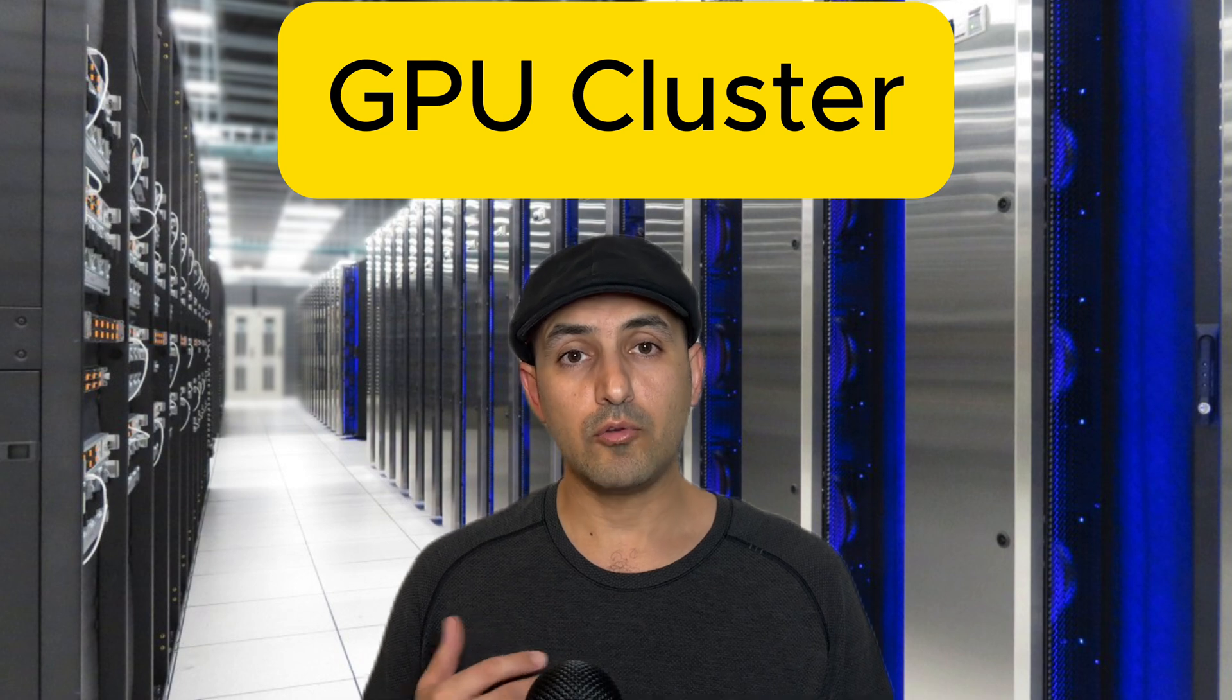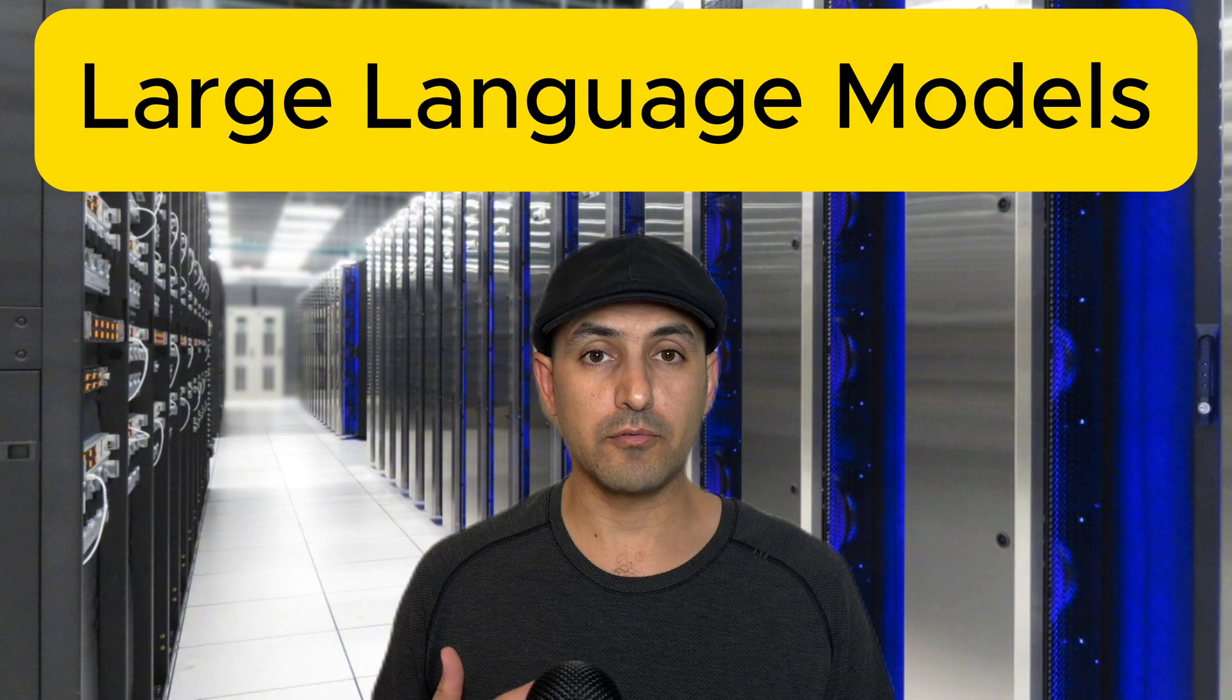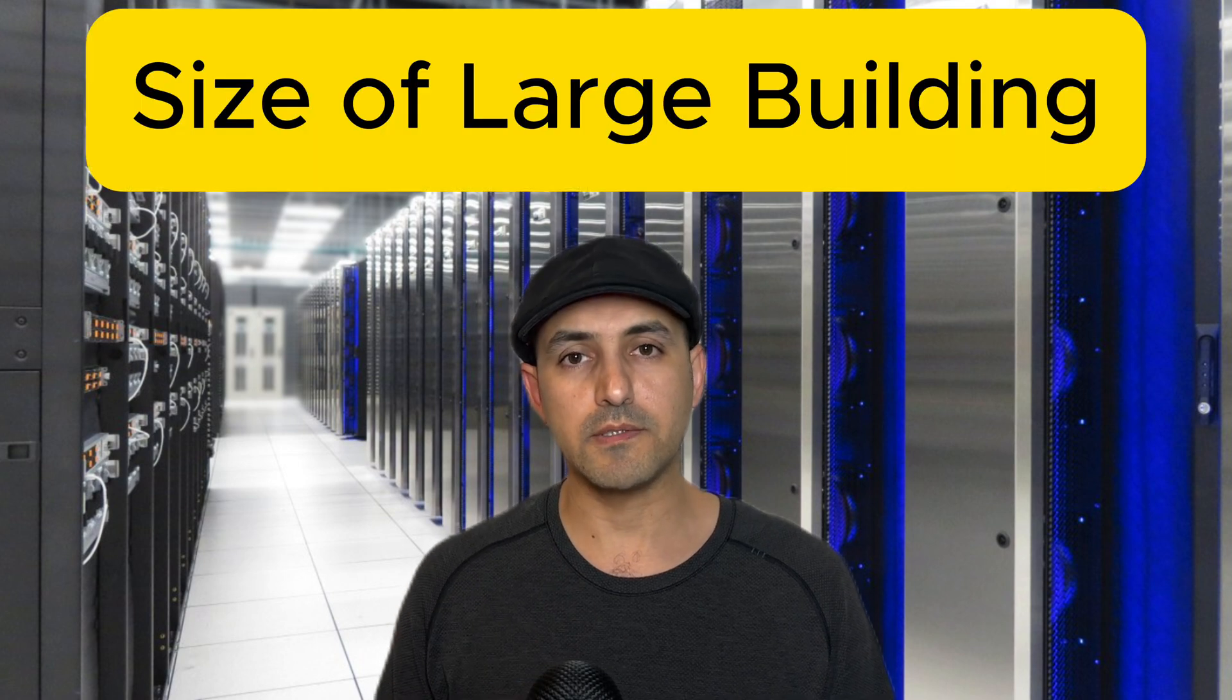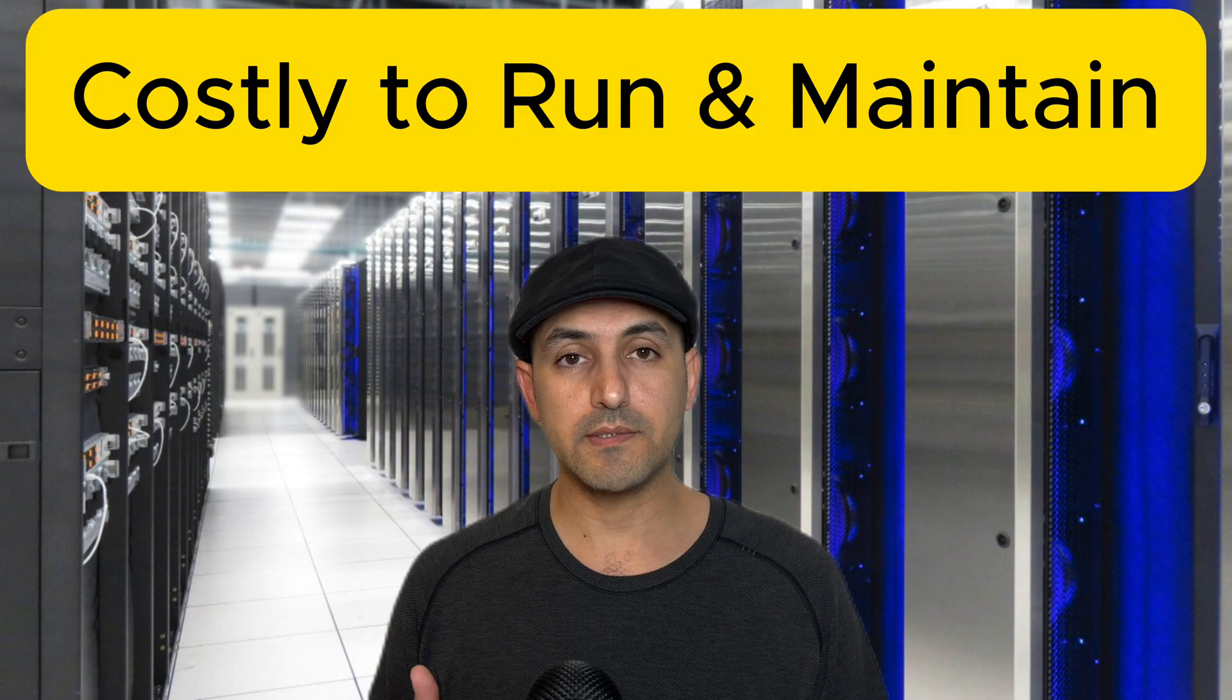And this is a GPU cluster that we use today to build large language models like GPT of OpenAI or Gemini of Google and others. Similar to the IBM 700 series, they are the size of a building, larger ones in this case, consume a lot of electricity, and generate a lot of heat.